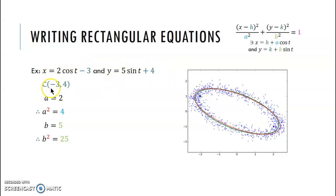So from the x, we get our h, negative three. From the y, we get our k, that's four. So our center is at negative three, four.